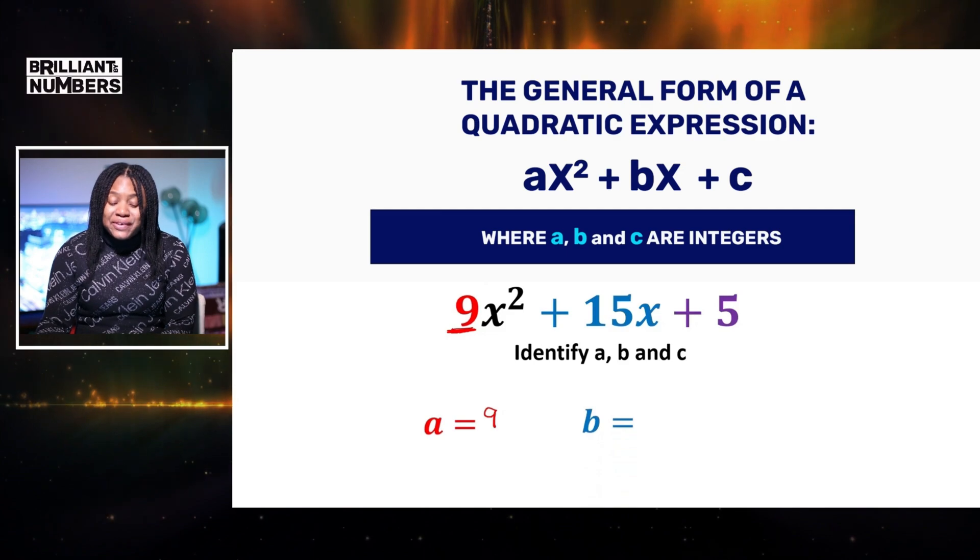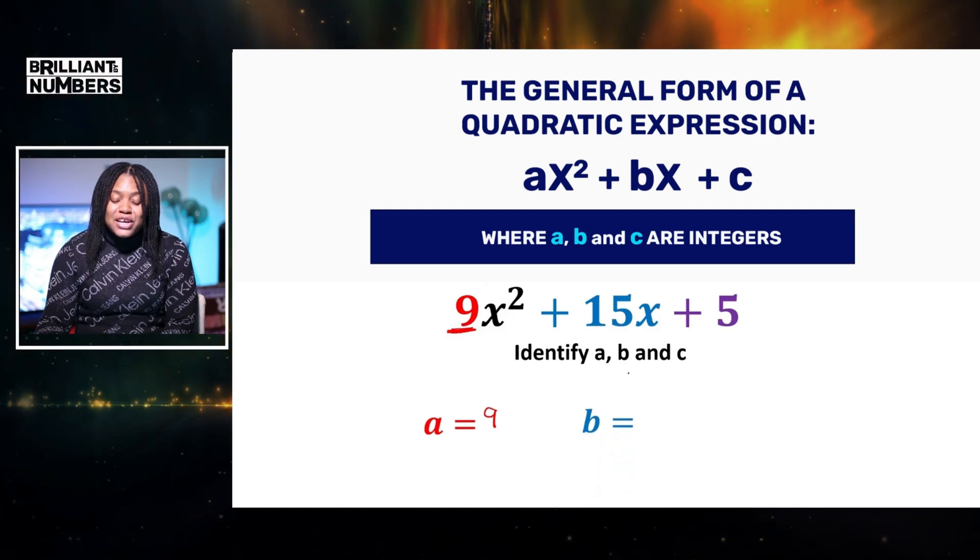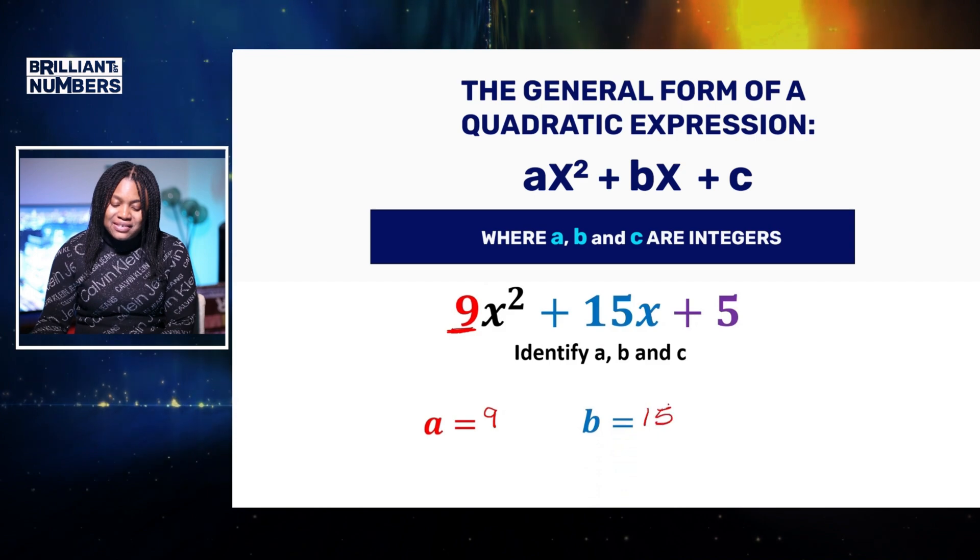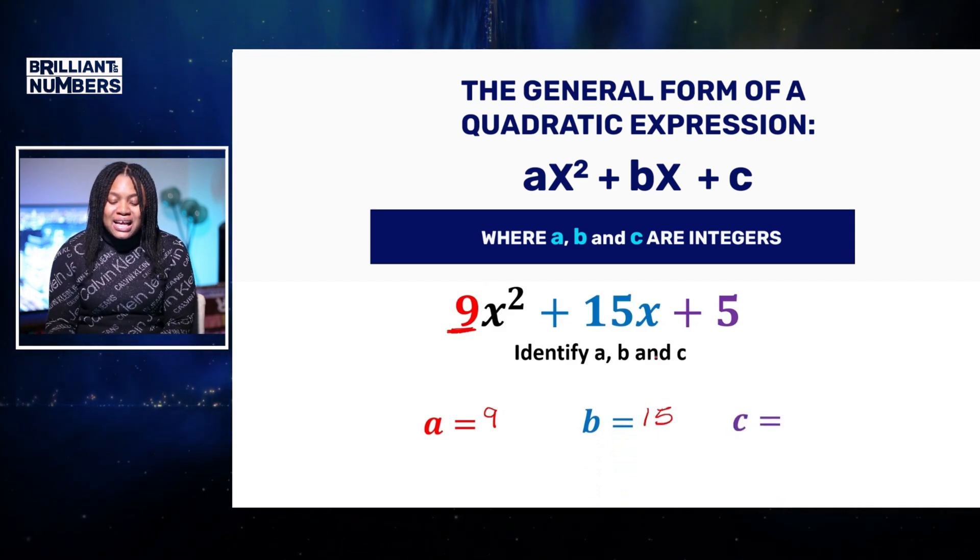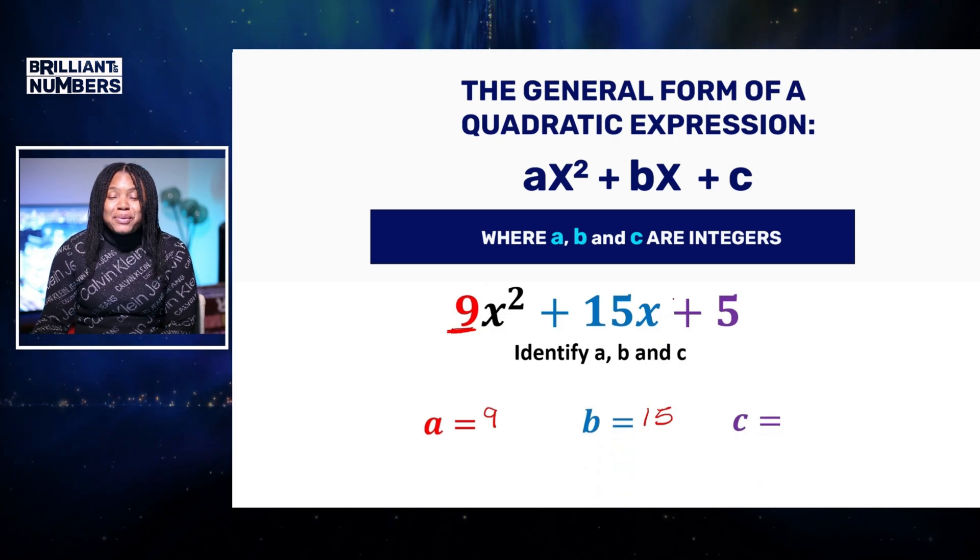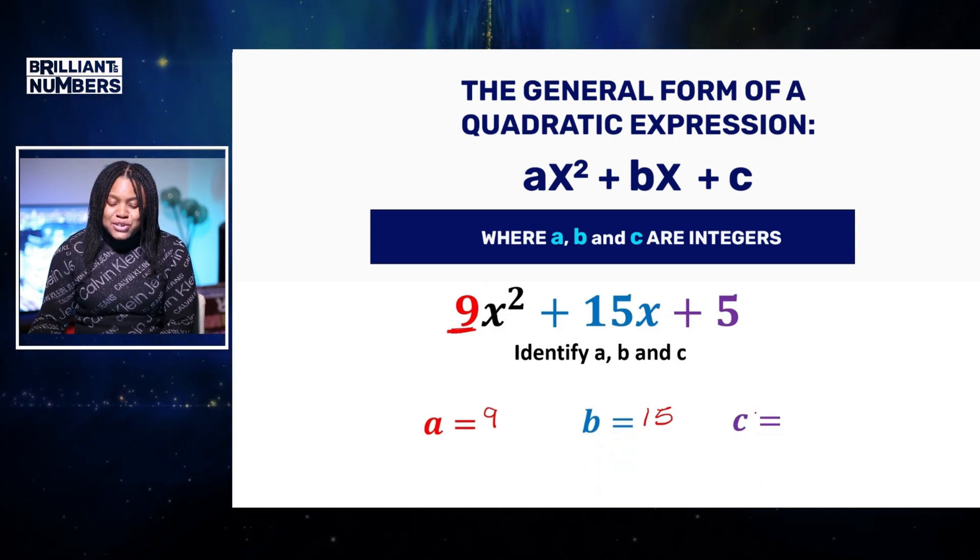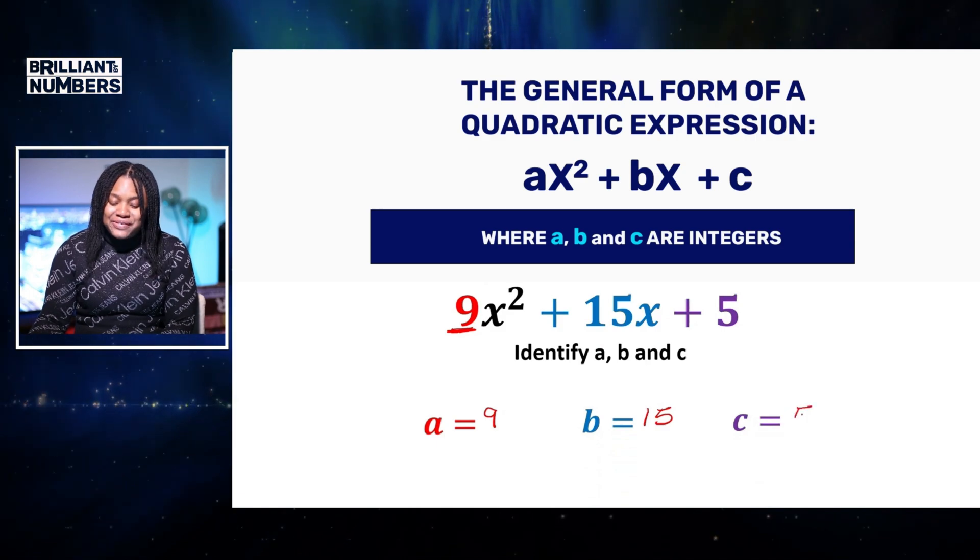B is the coefficient of x. Therefore, b is equal to 15. And c is our constant term, which means that this number does not change its value at all. So c is equal to 5.